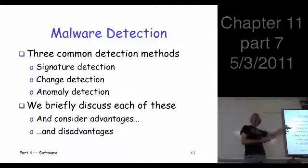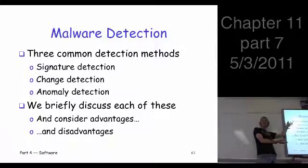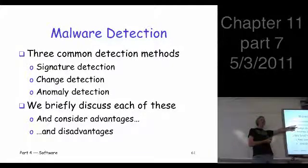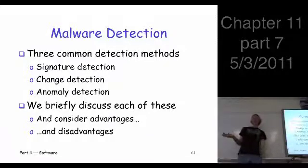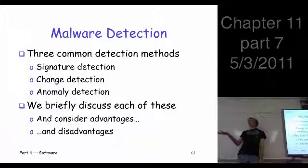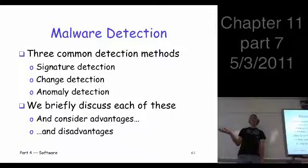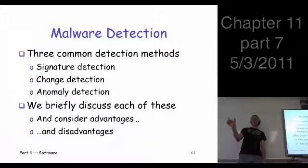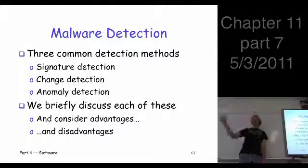Which one of these is most widely used? Signature. When you do your virus scan, it's a signature scan — it does a few other things, but primarily it's focused on signature scans. What is a signature? It's a sequence of bytes — literally a sequence of bits that show up in a particular file. It's looking for this sequence of bits that shows up in a particular malware, some virus somewhere, and it's going to scan through a bunch of files looking for this sequence of bits.